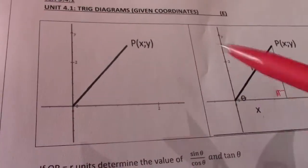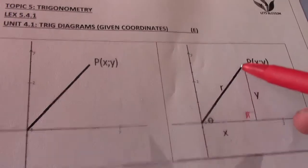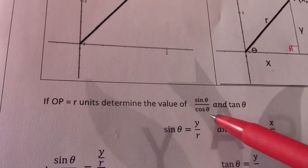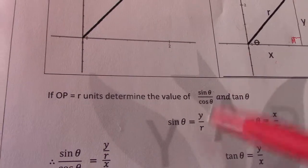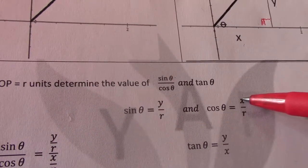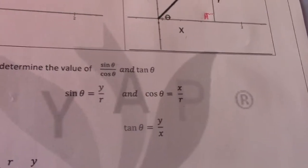So we can say if OP meaning from this point to P equal R units determine the value of sin theta over cos theta and tan theta. So you should know sin theta is Y over R. Cos theta is X over R.